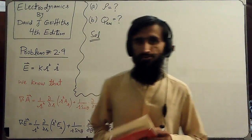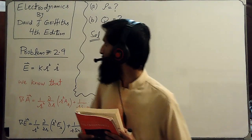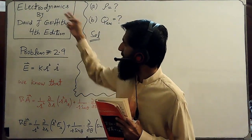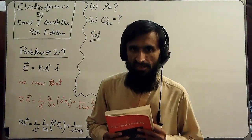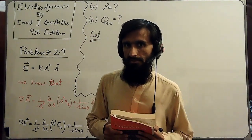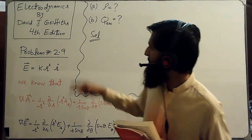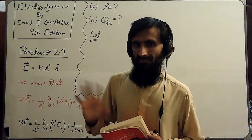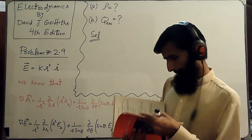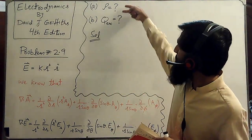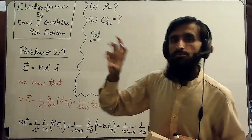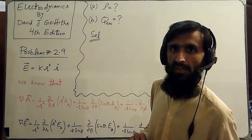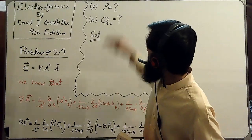Assalamu alaikum. Hello students. Today we have to solve problem number 2.9 of Electrodynamics, fourth edition, by David J. Griffiths. In this problem we have been given an electric field vector in spherical polar coordinates, and we have been asked to find the charge density rho and the total charge enclosed by a sphere having radius capital R. So let's see how we can find these two quantities.